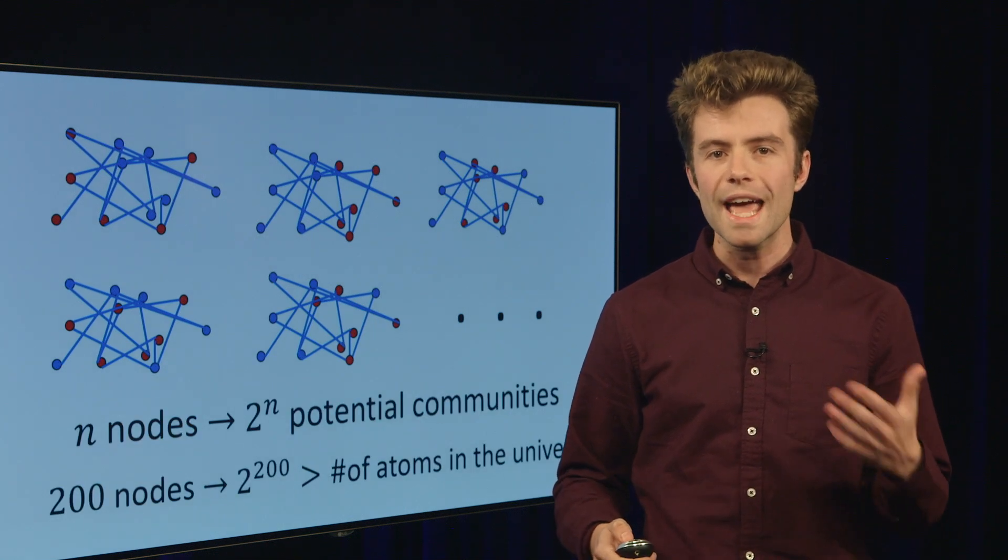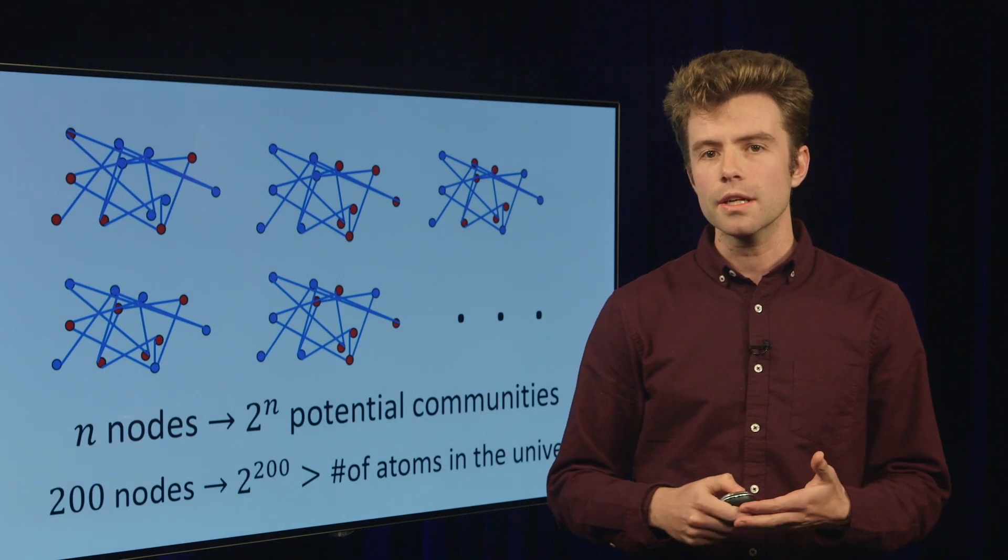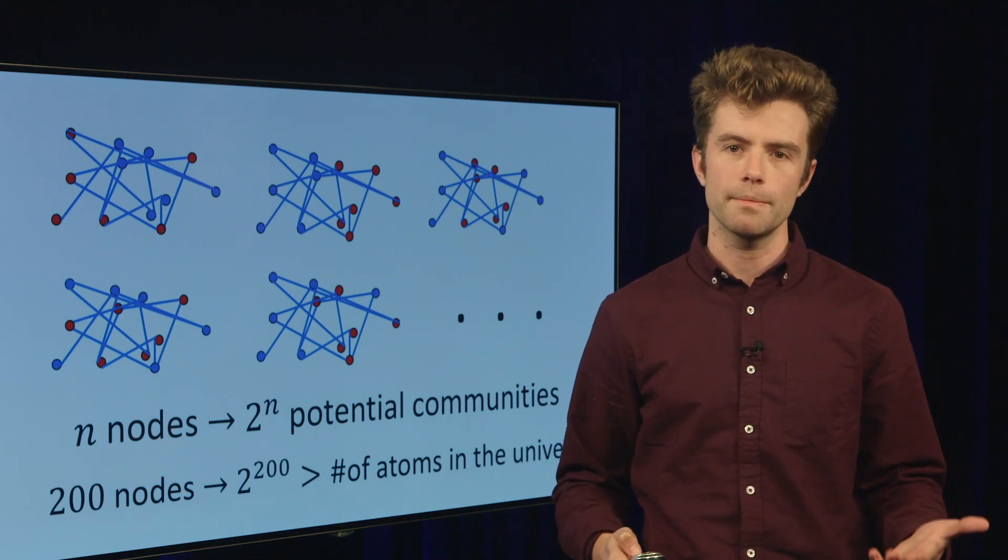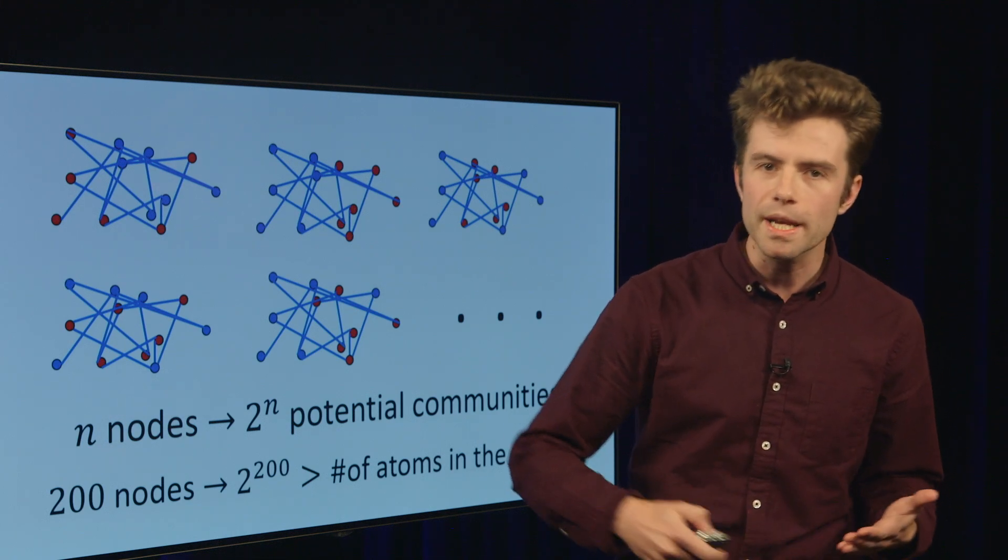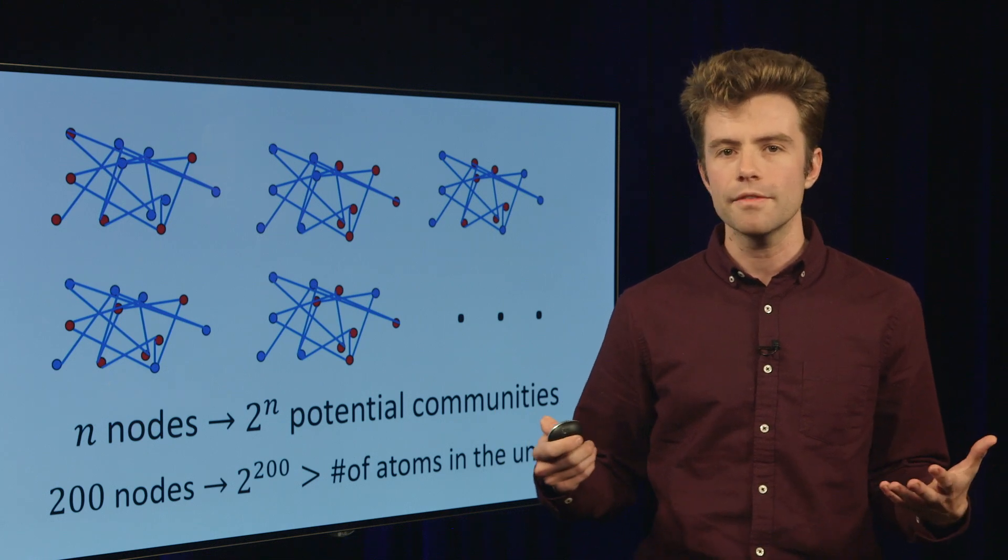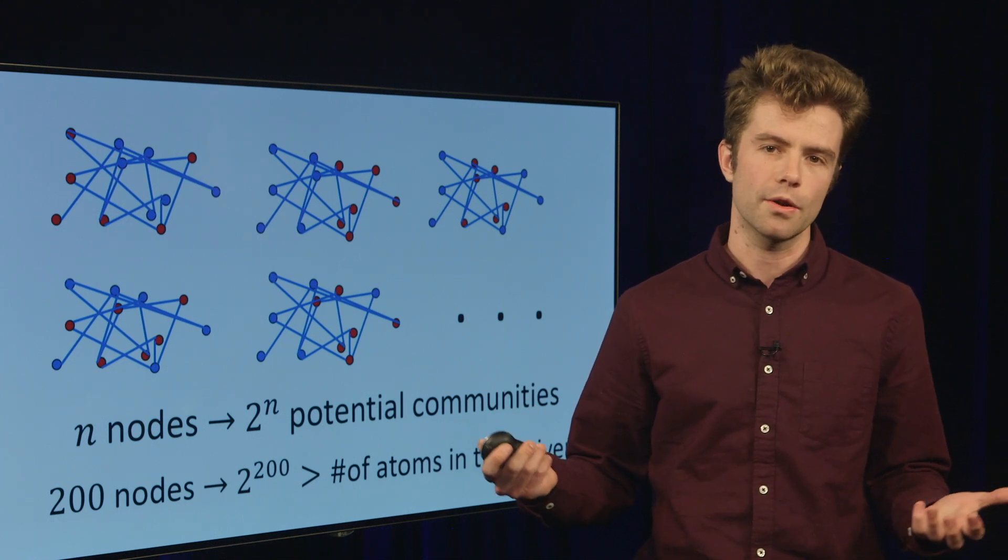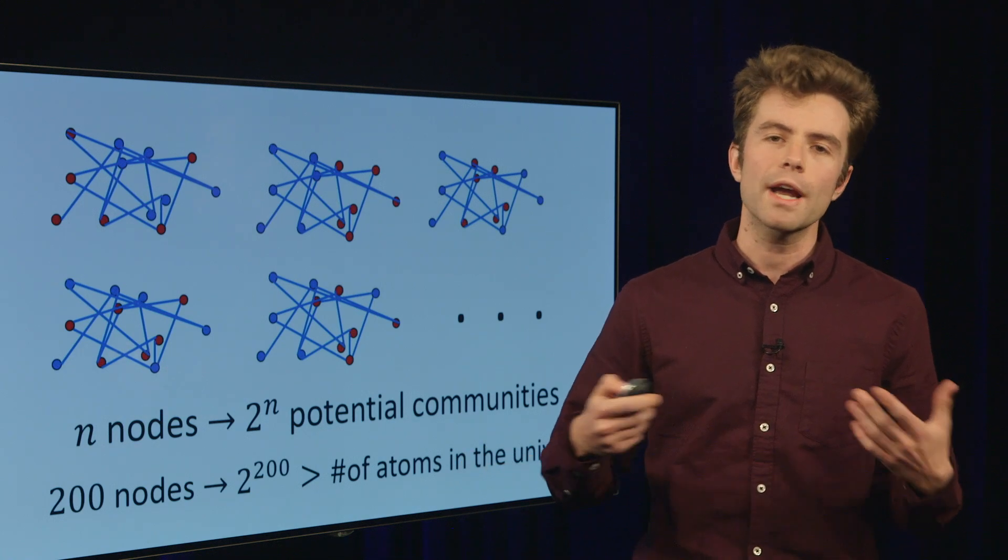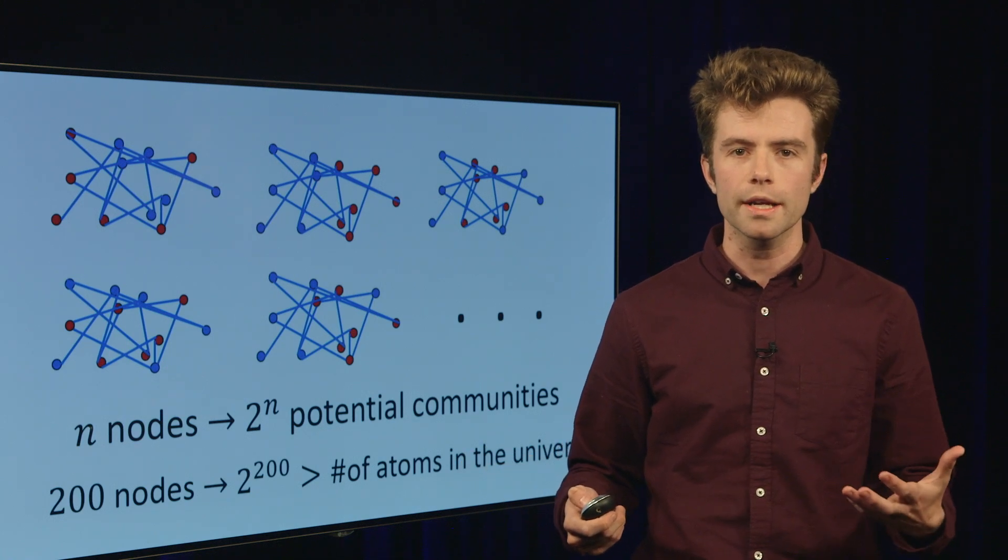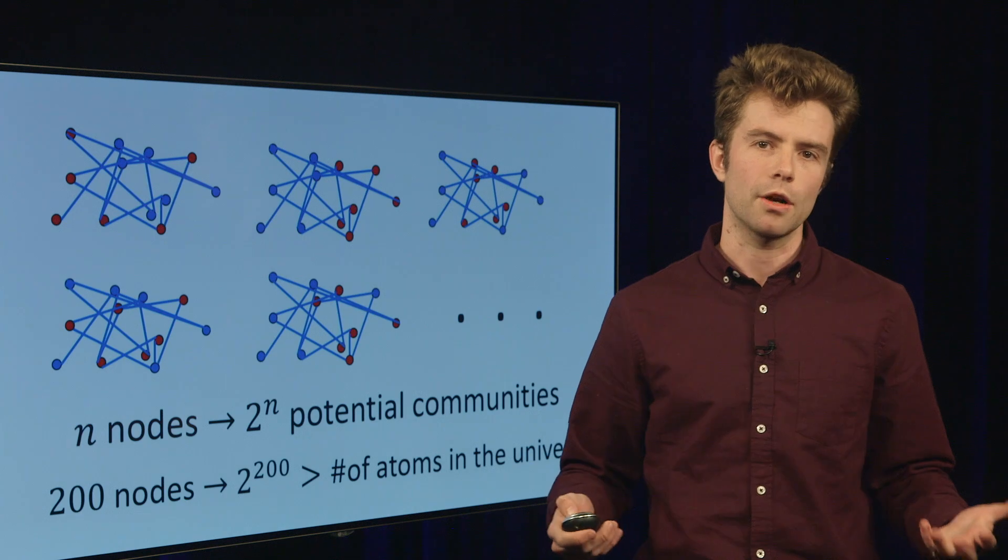In fact, in a network with n individuals and nodes, there are something like 2 to the n potential communities to check. 2 to the n undergoes exponential growth. So very rapidly, even for small data sets, 2 to the n is much bigger than the number of atoms in the known universe. And no matter how much computational power you try to harness, you will simply never be able to check all the possibilities.